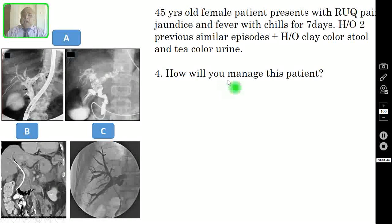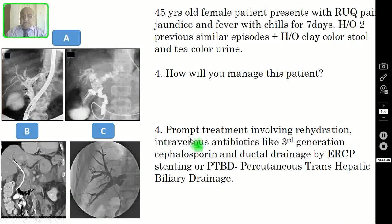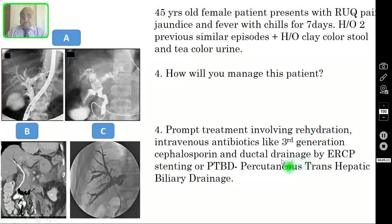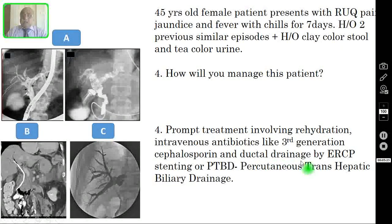Question number four: how will you manage this patient? The correct answer is prompt treatment involving rehydration, intravenous antibiotics like third-generation cephalosporins, and ductal drainage by ERCP stenting or PTBD — percutaneous transhepatic biliary drainage. Since acute and suppurative cholangitis are surgical emergencies, you must remove the infected bile by either ERCP nasobiliary drainage or percutaneous transhepatic biliary drainage under ultrasound control.